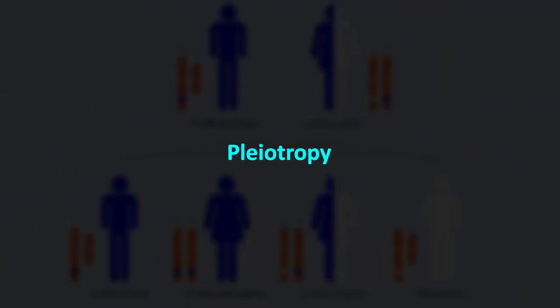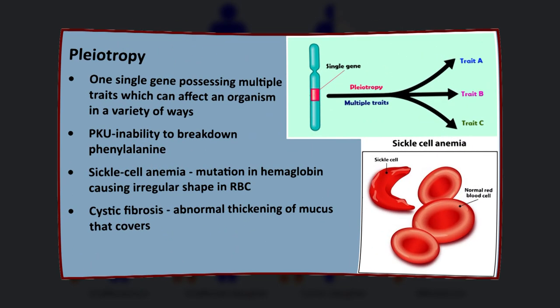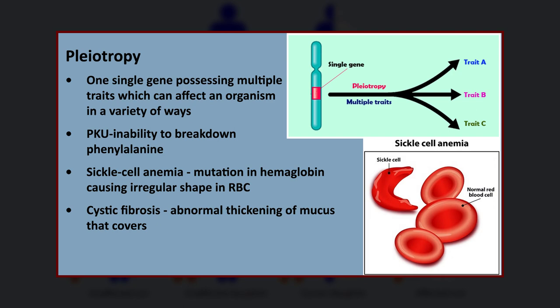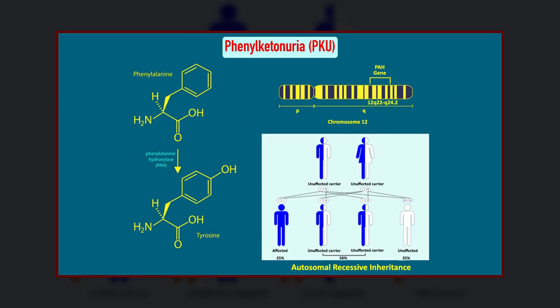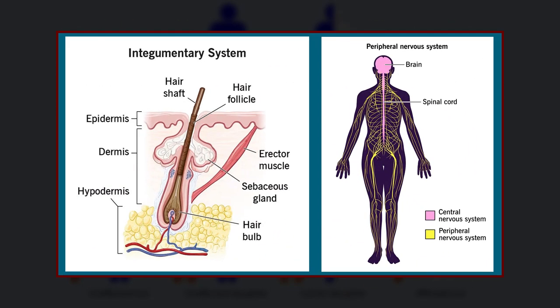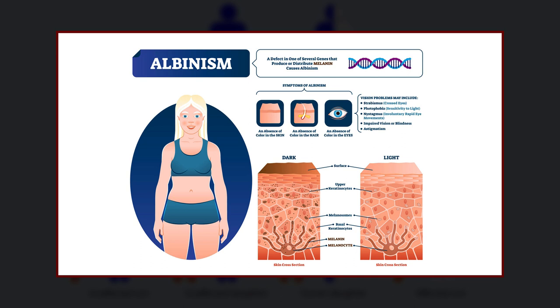Another example of codominance is pleiotropy. In pleiotropy, one gene affects multiple characteristics of the individual. The disease phenylketonuria is an example; it originates from a defect of a single gene on chromosome 12, but has an impact on multiple systems like the integumentary system of the skin and the nervous system. Albinism is another example of one gene affecting skin, eyes, and hair color.